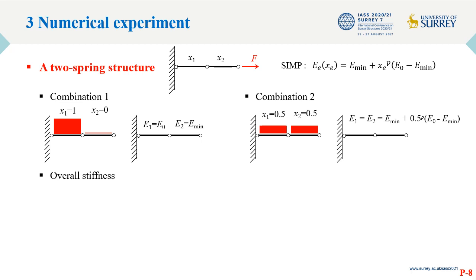The first combination assumes the elements have distinct design variables, x1 equal to 1 and x2 equal to 0.5. The stiffness of the elements is interpolated based on the SIMP approach. The second combination assumes the elements have intermediate design variables, x1 and x2 equal to 0.5. The overall stiffness is given below.